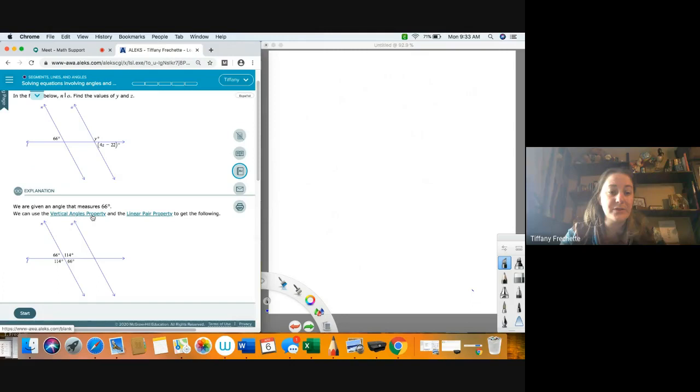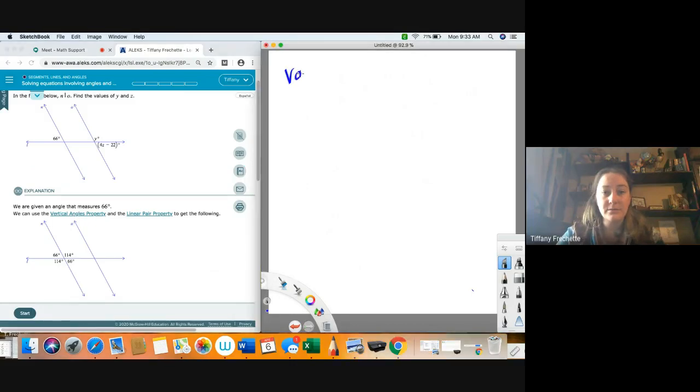So for this one, what we do need to understand, first they're giving us vertical angle property and linear pair property. So vertical angle. So vertical angles are whenever you have a crisscross like this, whenever you have lines crisscrossed, this doesn't require parallel lines at all. So this just requires two lines to cross like this.